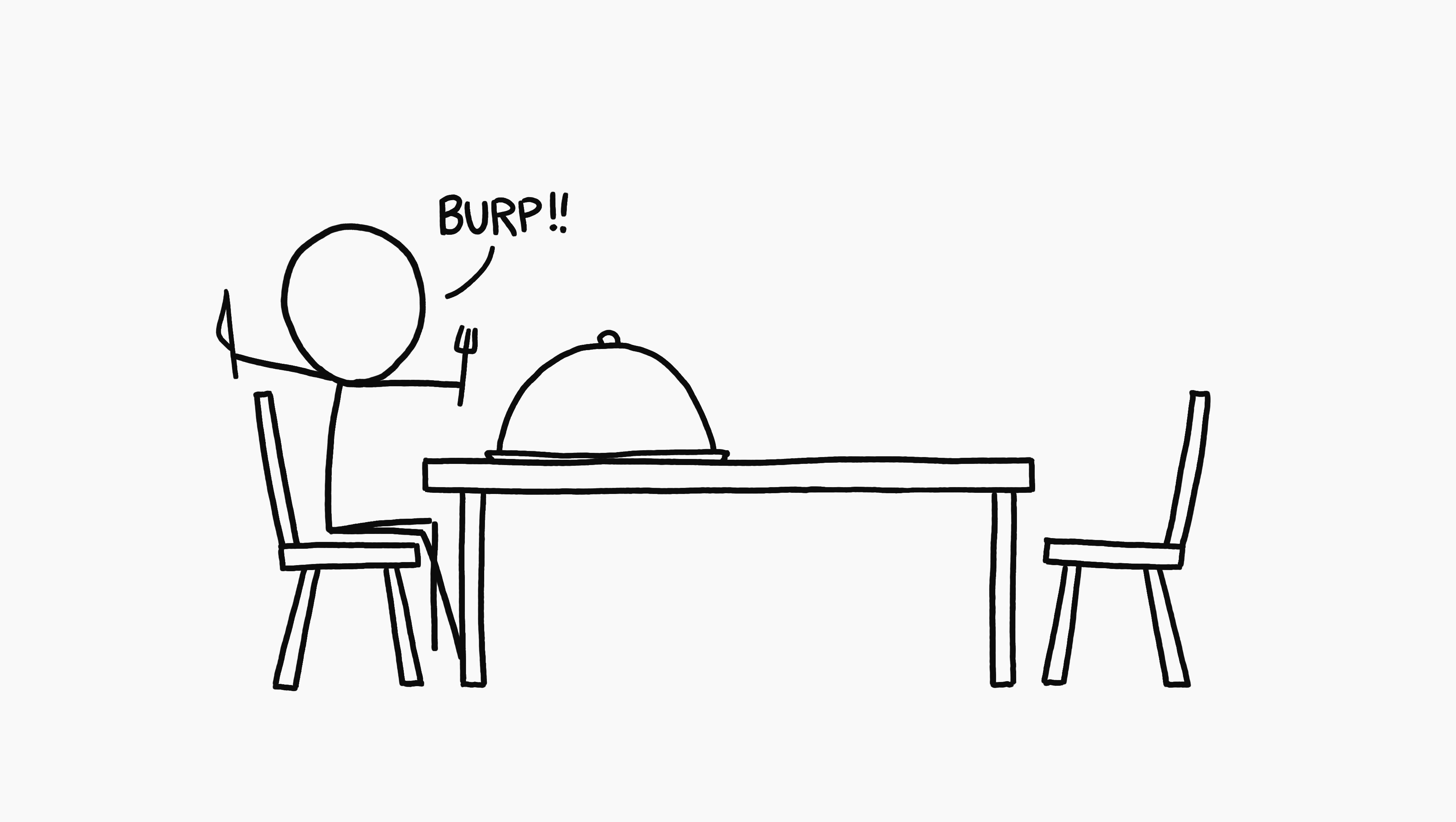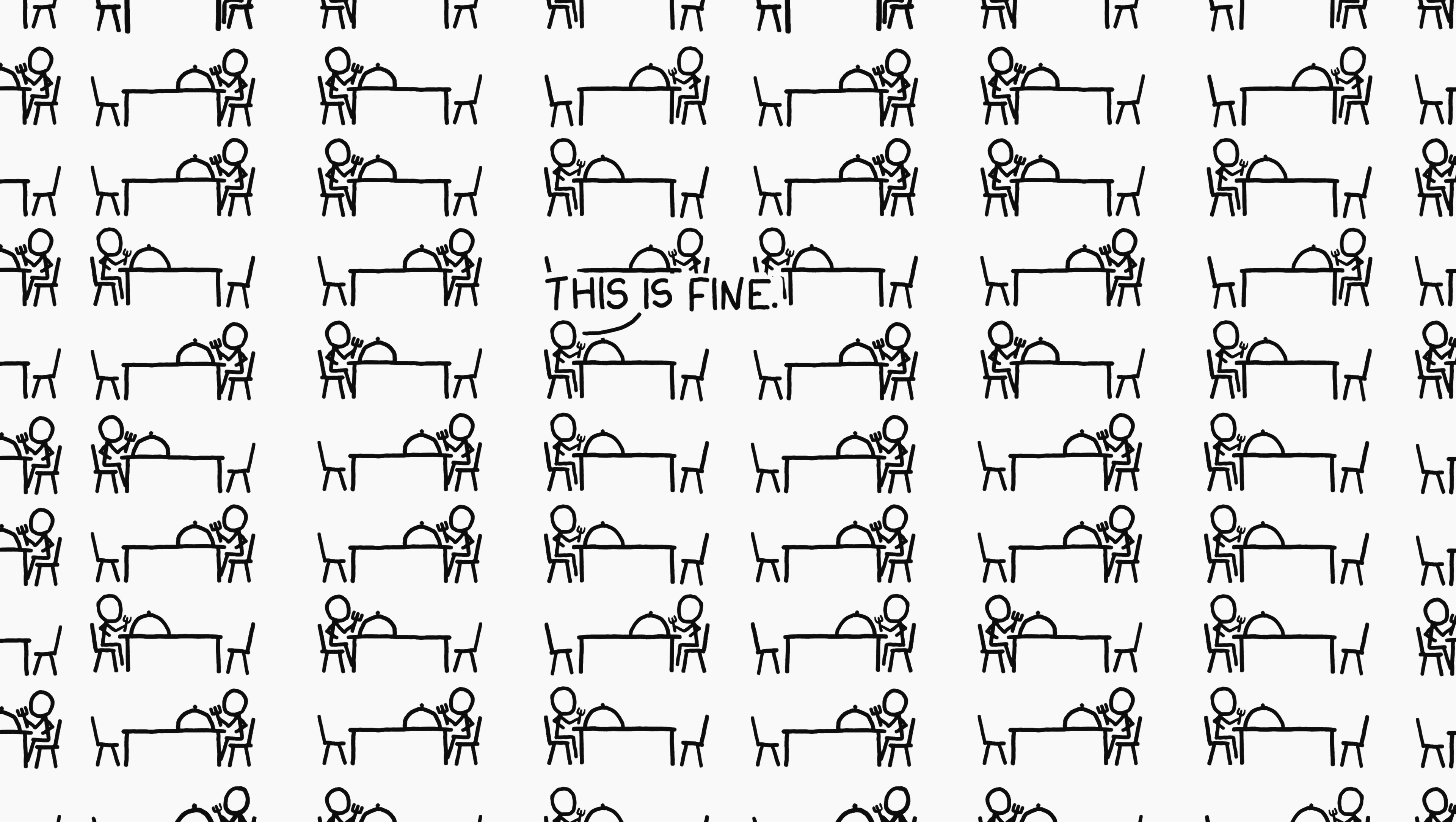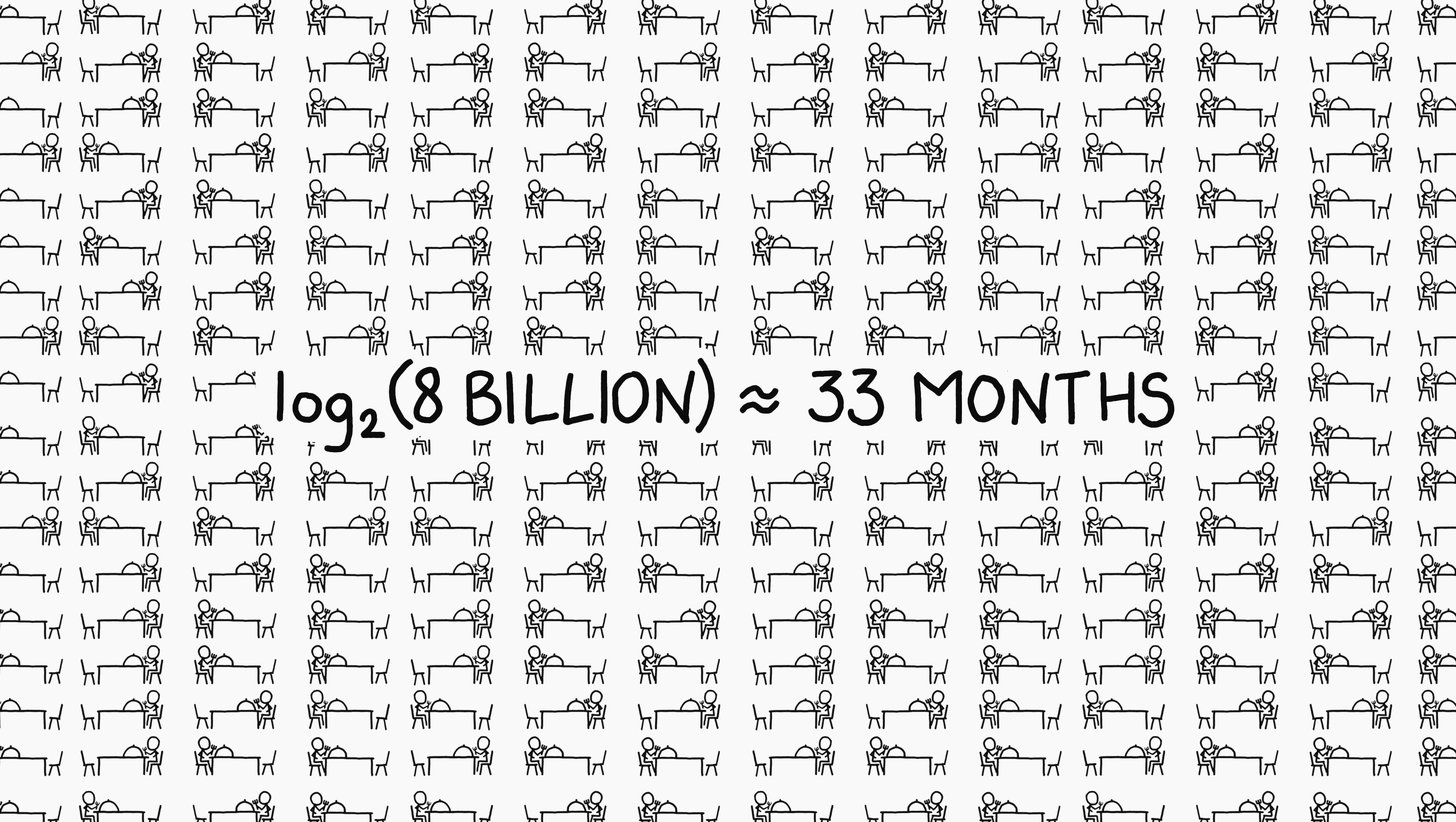If every month, half the population eats the other half, and in between everyone pretends nothing horrific is happening, we could go for 33 months of cannibalism before the second-to-last person was eaten by the last.